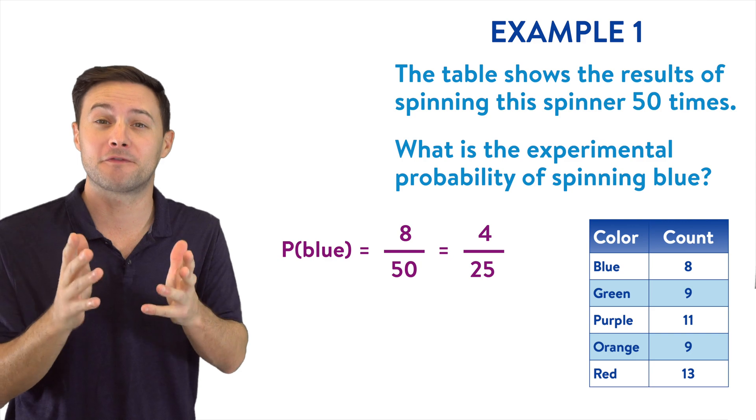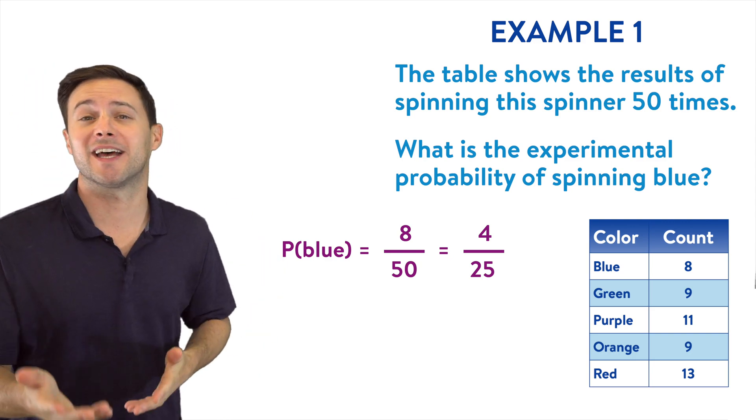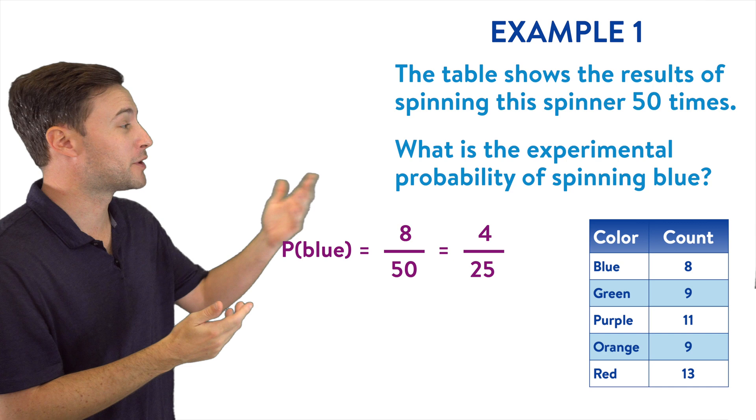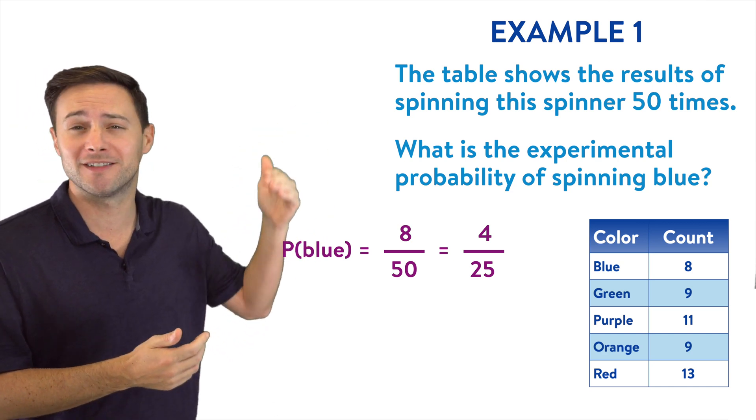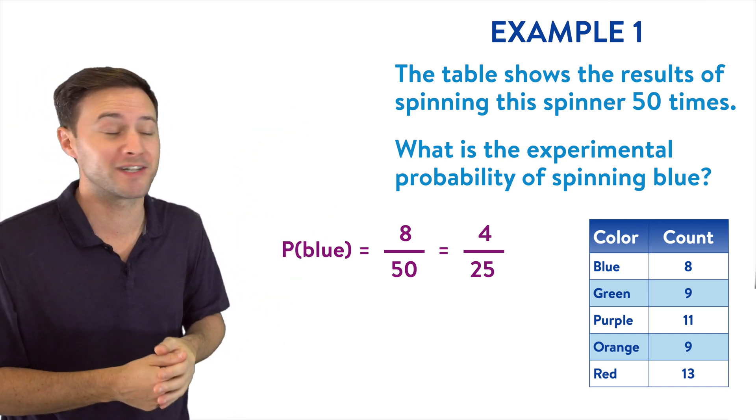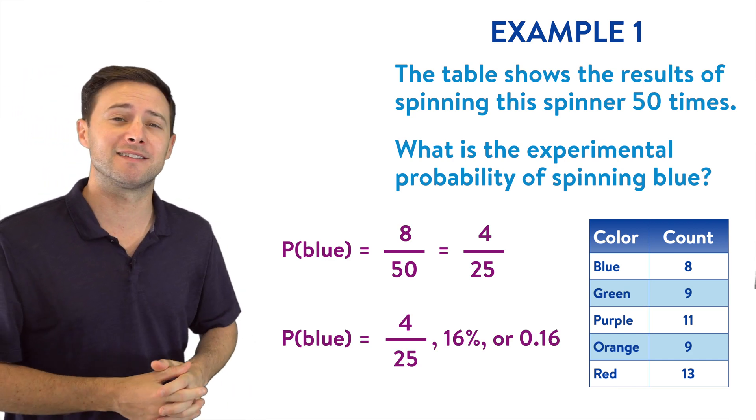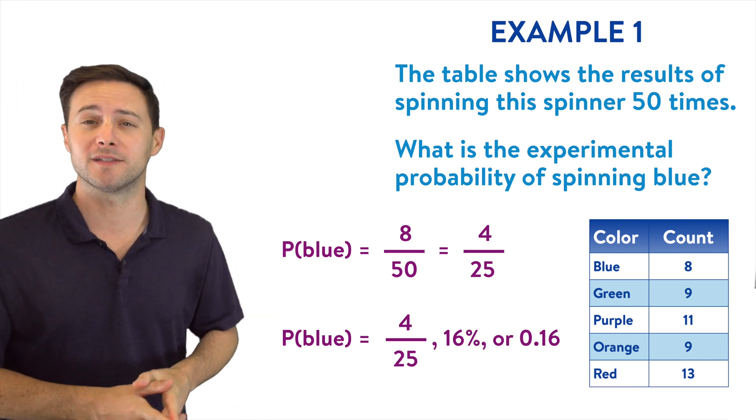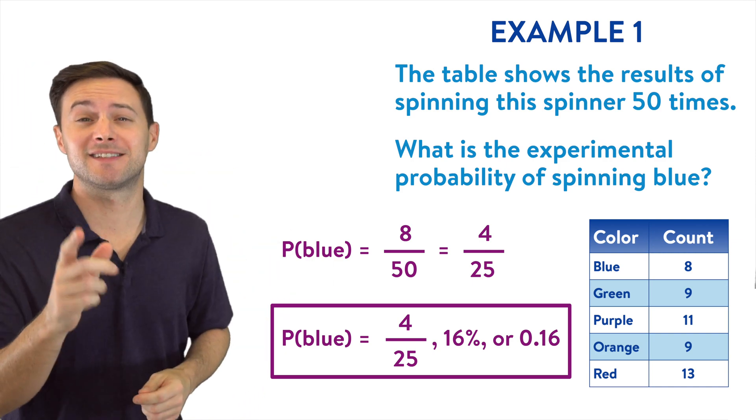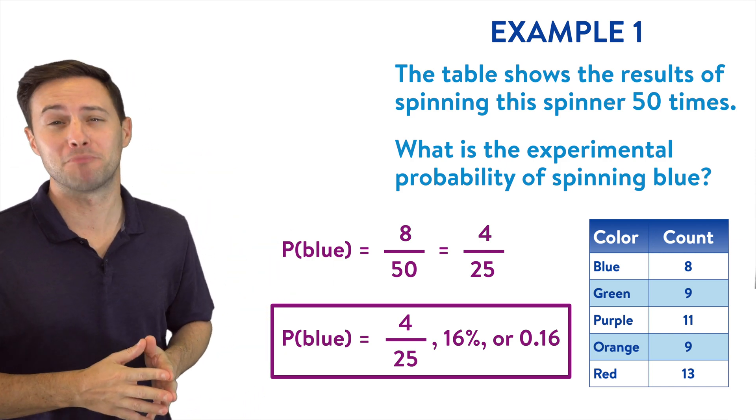That would be the fraction answer. We could change that into a percent, times numerator and denominator by four to get it over 100, which would be 16%. Or even as a decimal, we could write it as 0.16. Which means out of all 50 of those spins, 16% of the time, it landed on blue.